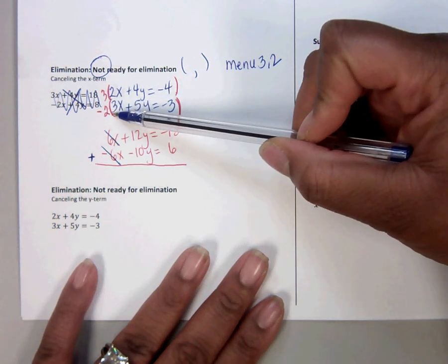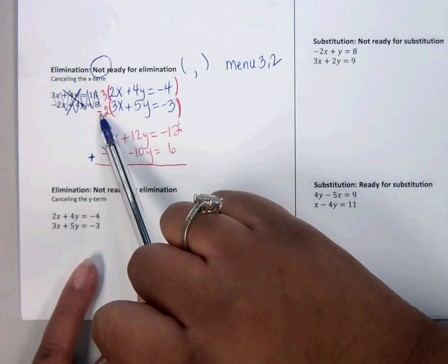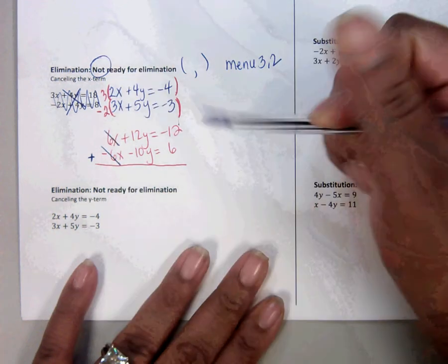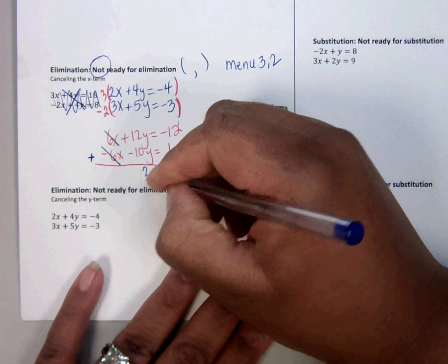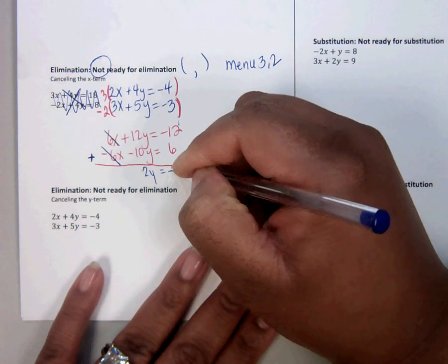You have to make one of them negative. Okay. So then this is 2y equals negative 6. We divide by 2 and we get y is negative 3.